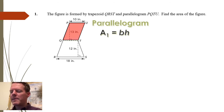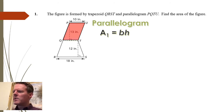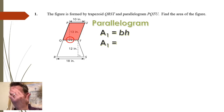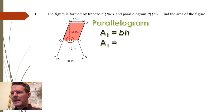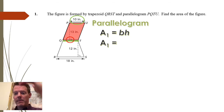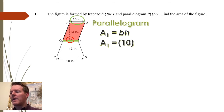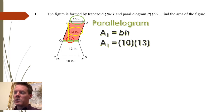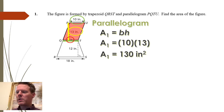So that's the parallelogram. Remember the area of a parallelogram formula is base times height. The base would be wherever that perpendicular line hits — I can see it's hitting that bottom line there, so that would be my base. I can get that distance from the top since the top and bottom are the same length. So the base is 10 and the height is 13. The parallelogram is 10 times 13, which is 130 square inches.